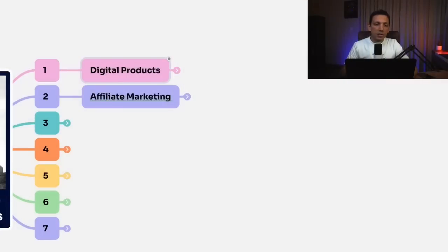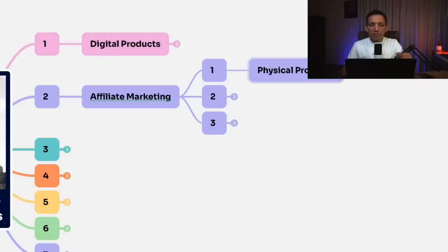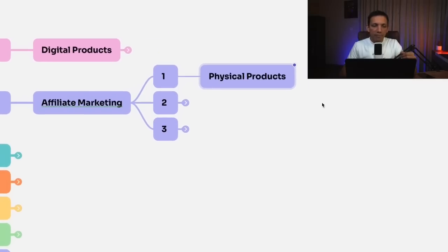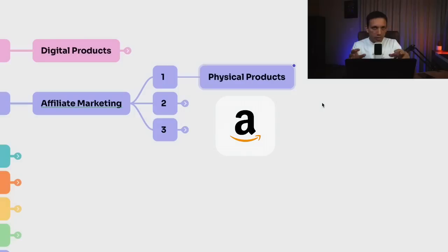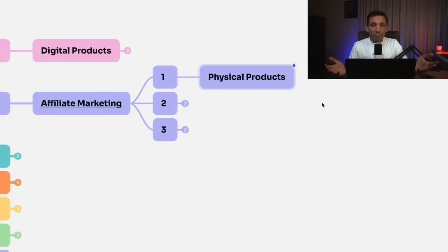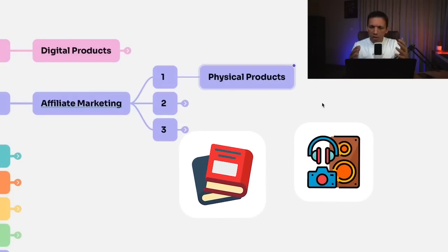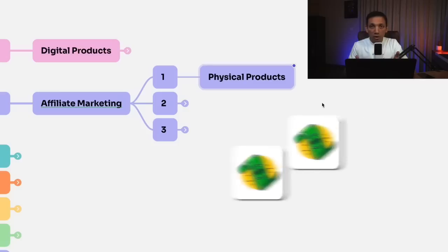The second way to create a passive income is through affiliate marketing — selling other people's products. When it comes to affiliate marketing, I have three different ideas. One is you can sell other people's physical products. For example, if you become an affiliate on Amazon, you can search for the Amazon Associates program, set up a free account, and start promoting any Amazon products — whether books, gadgets, or whatever — and start making money without having a product of your own.